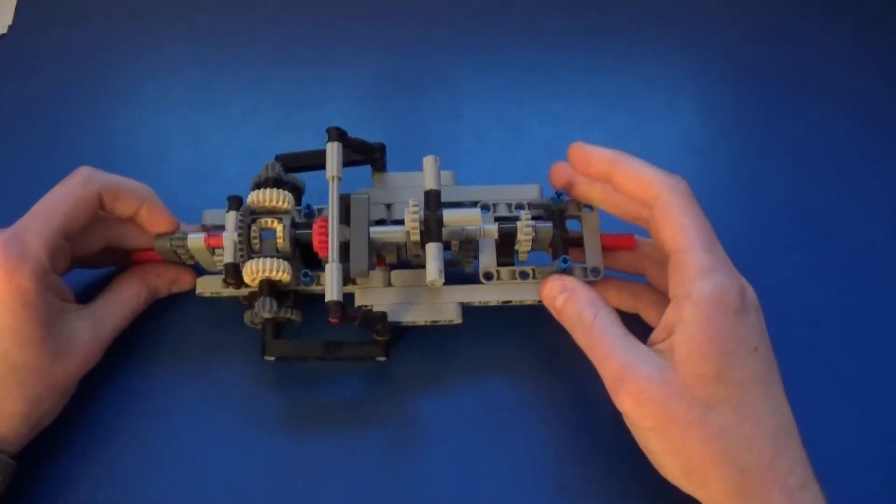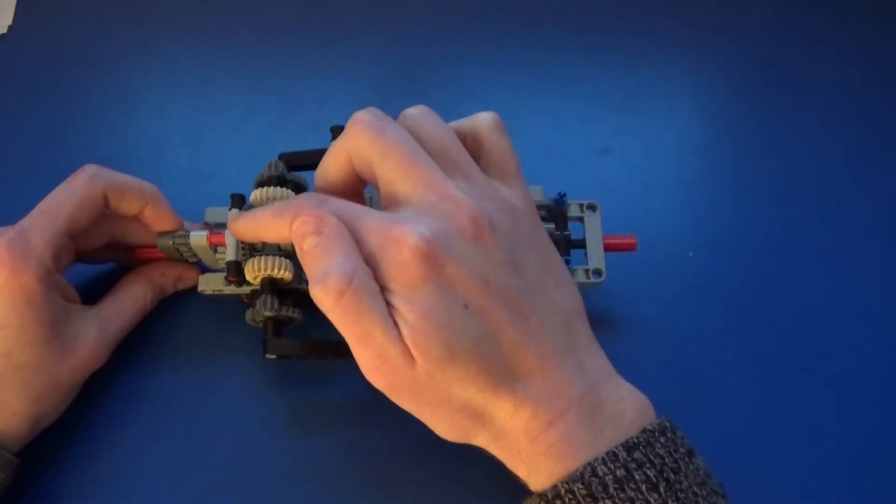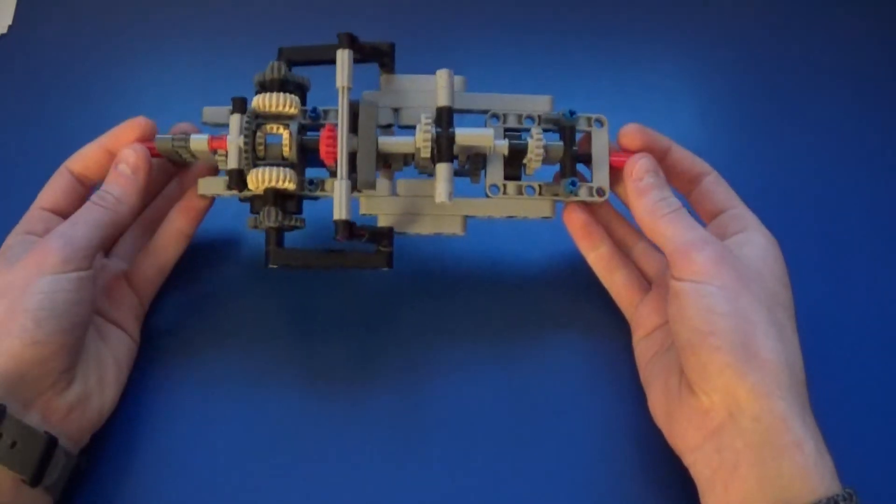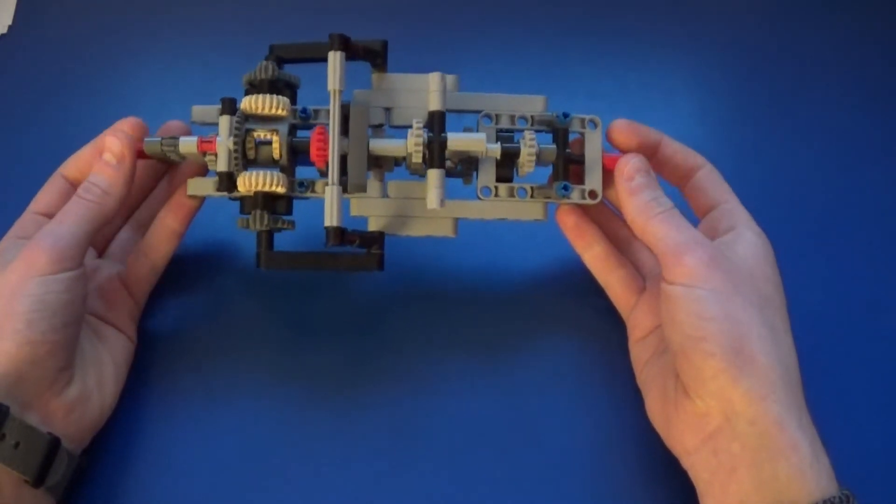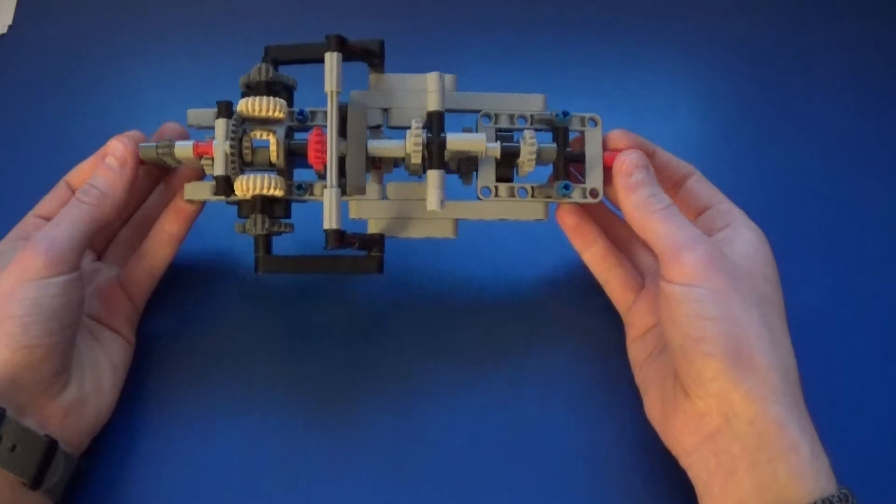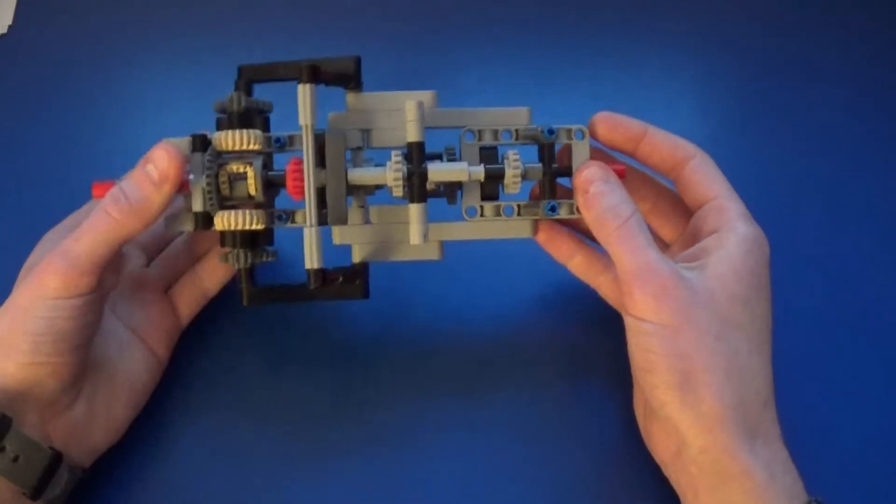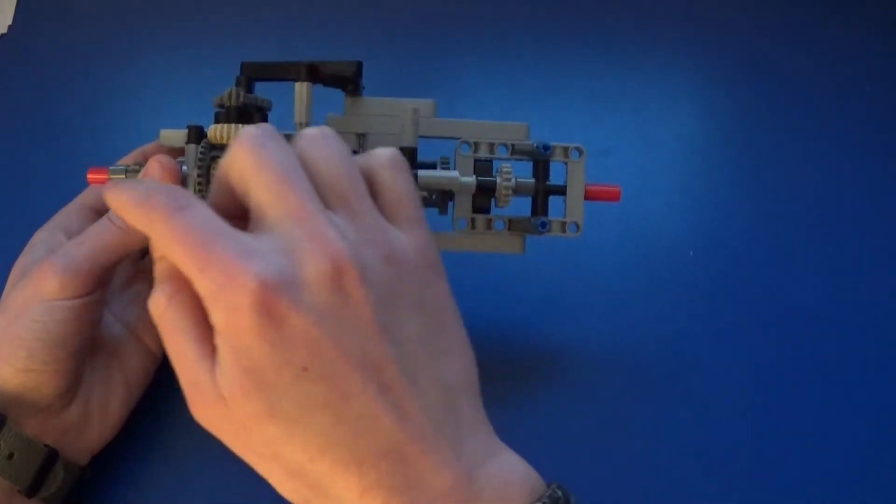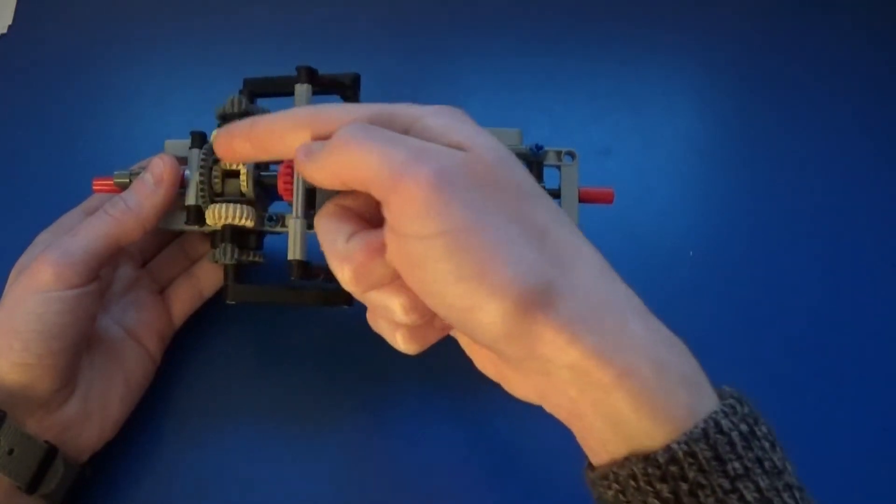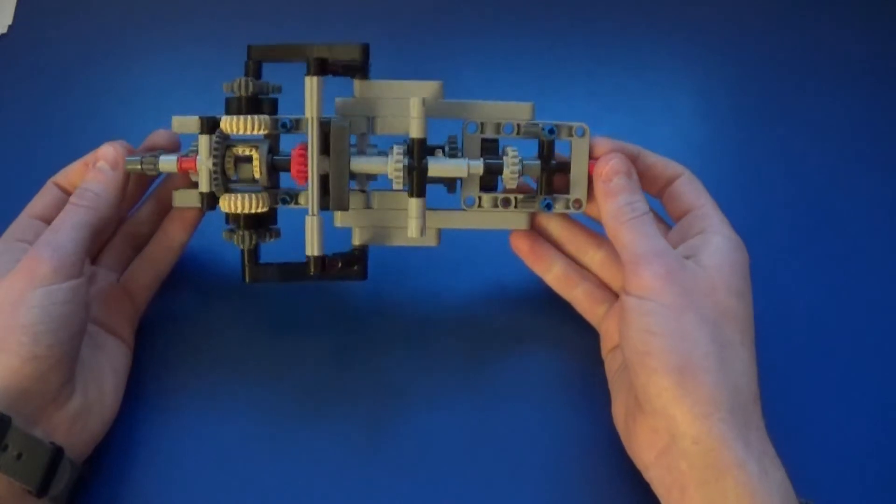That's kind of the secret to this whole thing. Because as you can see, in this differential right here, when both are spinning at the same speed in the same direction - mimicking a car going in a straight line - then the power is transferred through this series of bevel gears, and the outer gear of the differential is completely unaffected.